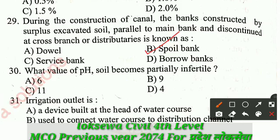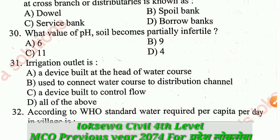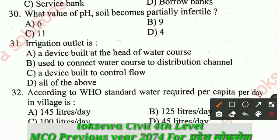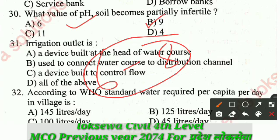Question number 30: What value of pH causes soil to become partially infertile? The correct answer is 9. A normal pH range of 6 to 8 is fine, but at pH 9 the soil becomes partially infertile.